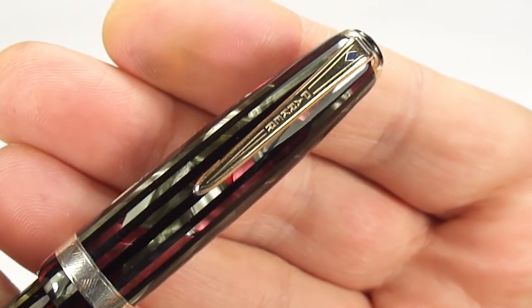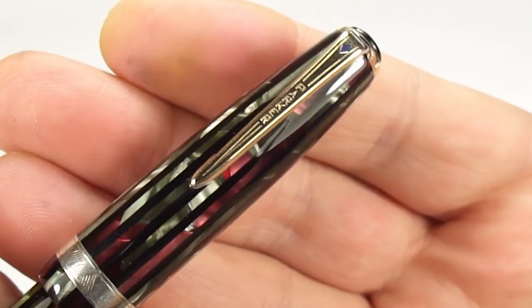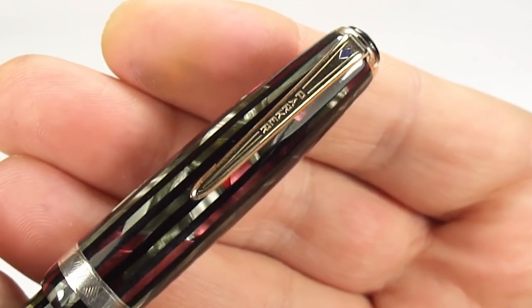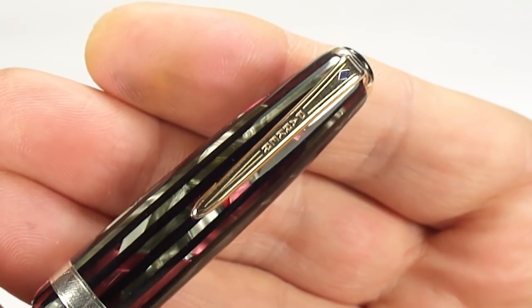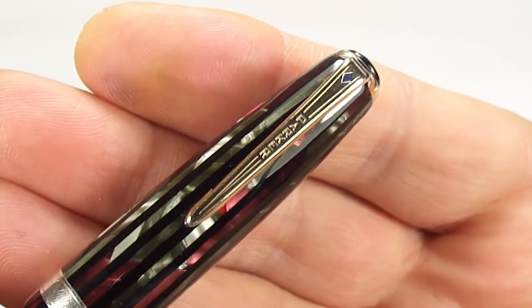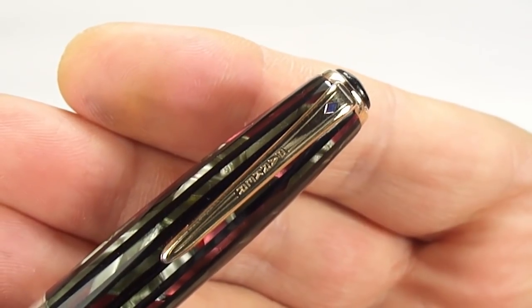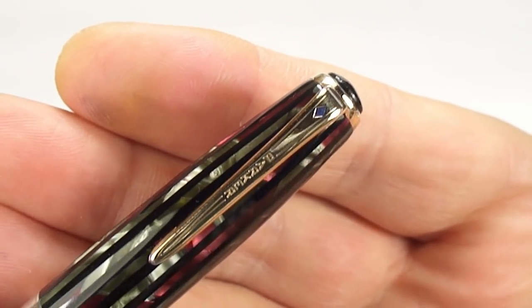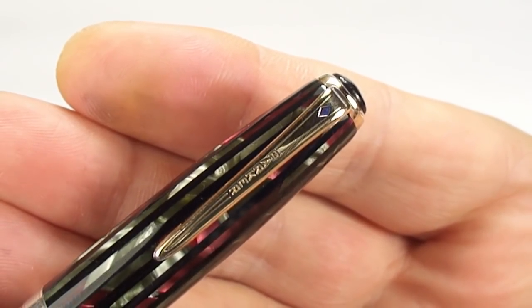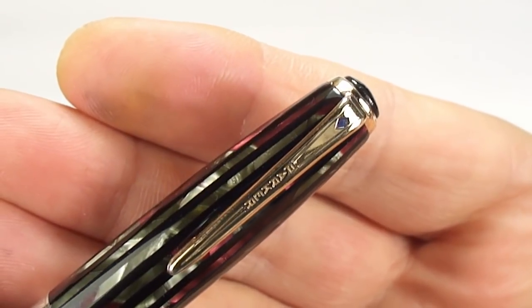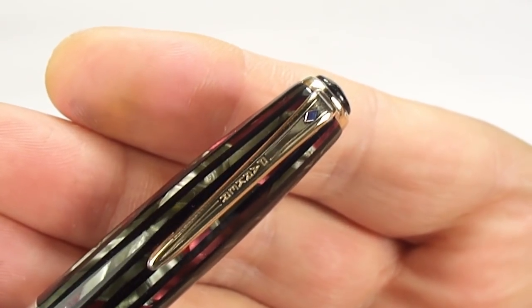You can see it's got a rather tapered Parker clip. To the sort of center of the clip there, you can see it actually says Parker, and you'll see to the very top there we have what we term as the blue diamond. And once again, the blue diamond was only on some specific models.